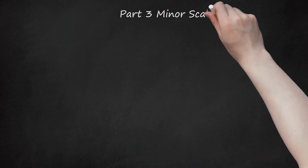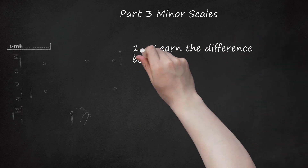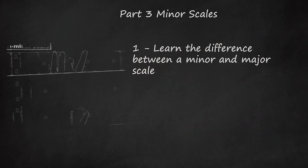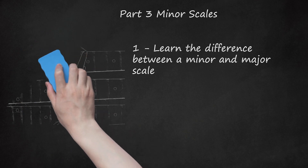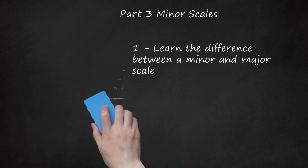Part 3: Minor Scales. Learn the difference between a minor and major scale. A minor scale has a lot in common with a major scale — it's also named for its root note (e.g., E minor, A minor). Most of the notes are even the same; there are just a few changes: the minor scale has a flat 3rd degree, a flat 6th degree, and a flat 7th degree. To make a note flat, just move it down one half step, meaning the 3rd, 6th, and 7th notes will be one fret lower than in a major scale.